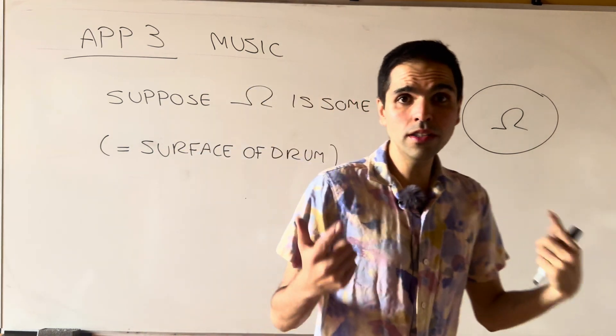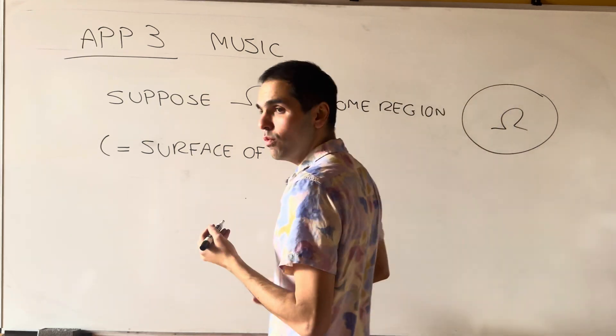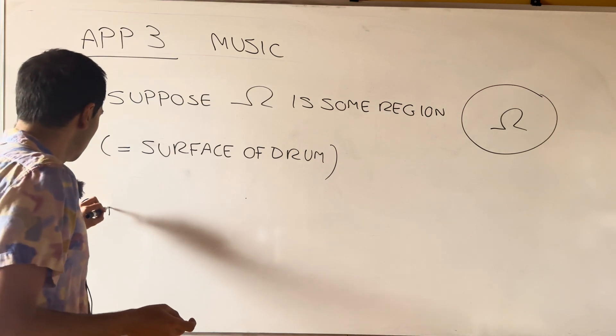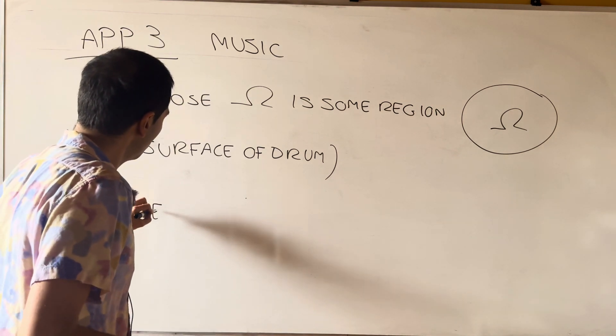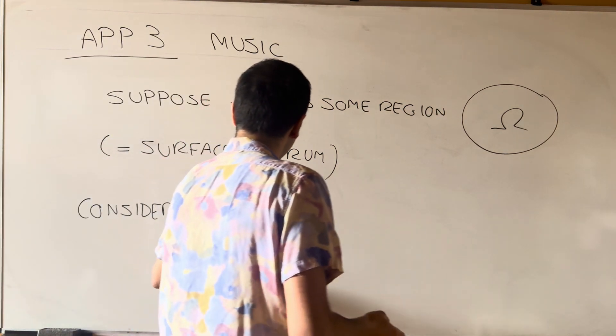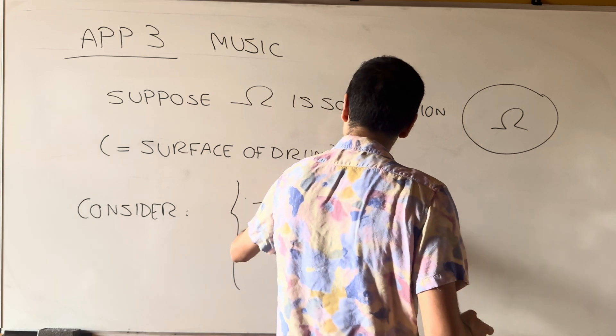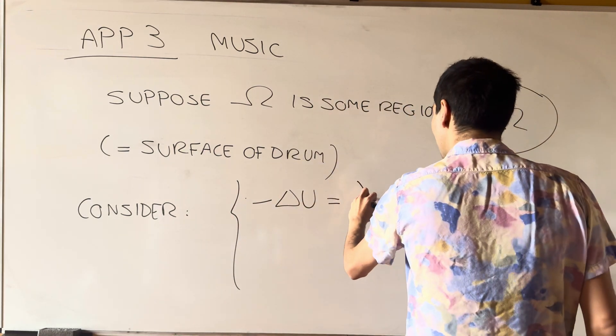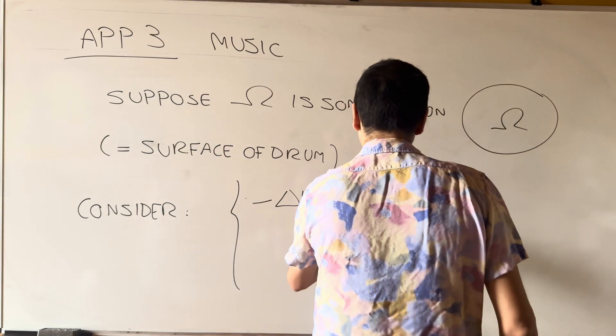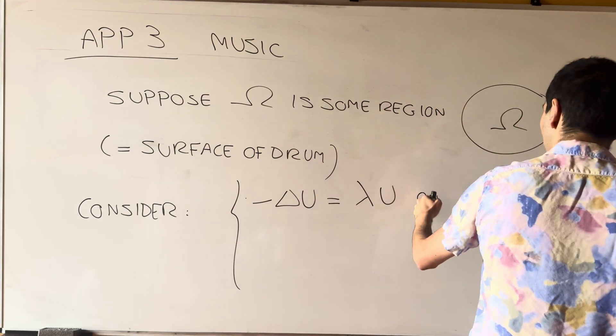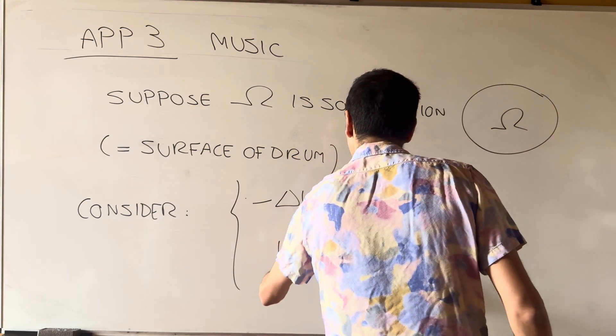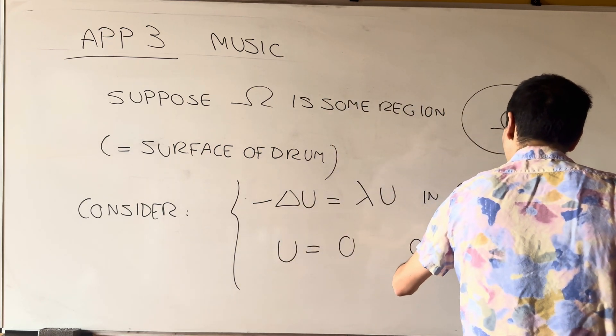And now consider the following PDE, which is sometimes called an eigenvalue problem. So minus Laplace of u, the minus is for convenience, equals lambda u on, or inside the region, omega, and u equals 0 on the boundary.